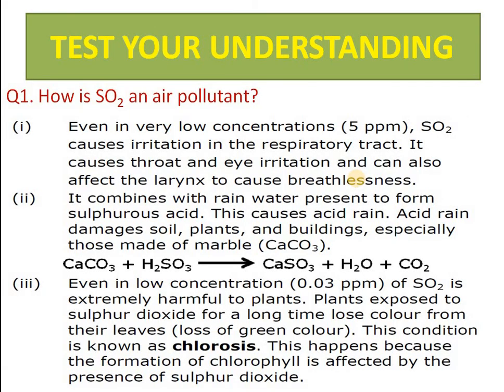Sulfur dioxide is an air pollutant. At a low concentration of just 5 ppm, it causes irritation in the respiratory tract due to its suffocating nature, leading to breathlessness. When sulfur dioxide comes into contact with water in the air, it forms sulfurous acid, which causes acid rain. This can damage marble — for example, the deterioration of the Taj Mahal is linked to acid rain. Even at 0.03 ppm, sulfur dioxide is extremely harmful to plants, causing loss of color due to damage to chlorophyll — a condition known as chlorosis.